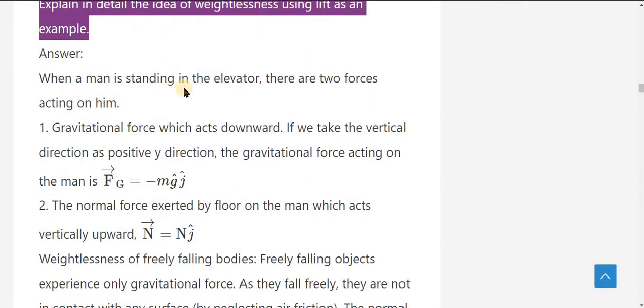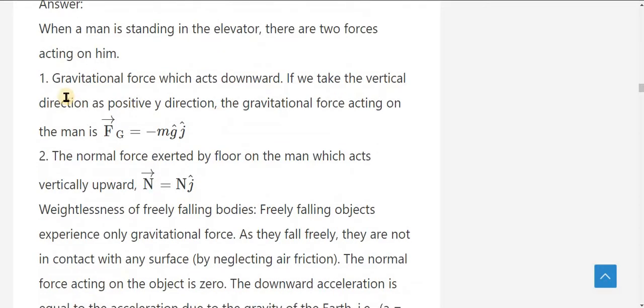When a man is standing in the elevator, there are two forces acting on him. The first force is gravitational force which acts downwards. If we take the vertical direction as positive y direction, the gravitational force acting on the man is: